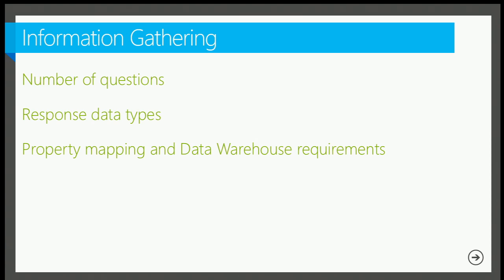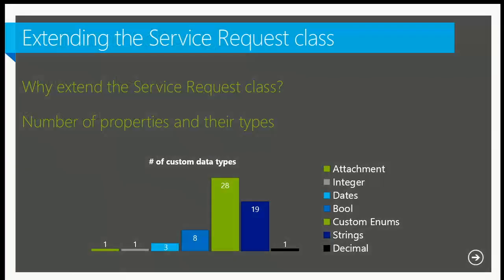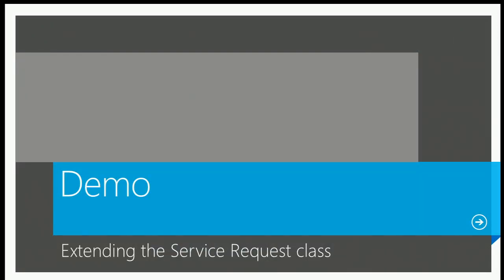Now let's talk about extending the service request class — which is how we actually add properties to the service request. We take the base properties and add to them. That's when we need to know the number of properties and their types. In our environment, we have 28 custom enums or lists, 19 strings, and 8 bools, across approximately 1,200 request offerings.